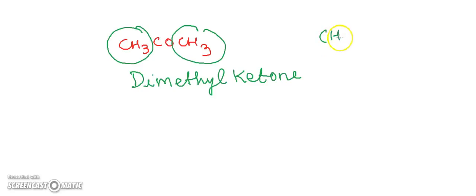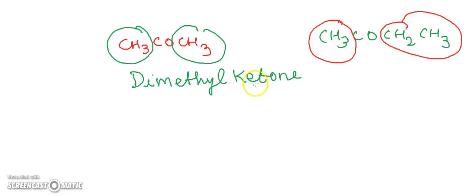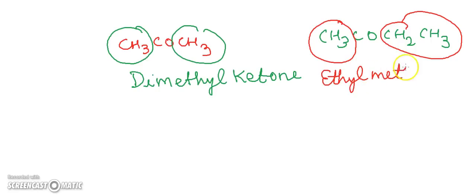Another example: CH3–CO–CH2–CH3. Here we have two different alkyl groups — one methyl and one ethyl. So this ketone is named ethyl methyl ketone.